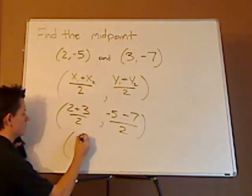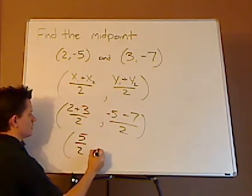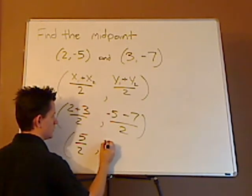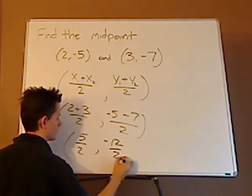So you have 5 over 2, comma, negative 12 over 2.